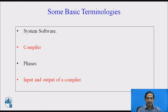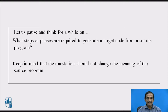The input of a compiler is a source code and the output is a target program, sometimes called object code, which has to be linked and loaded before generating the machine executable code. The object code contains all the requirements needed by the linker and the loader. Keep in mind that the translation should not change the meaning of the source program.